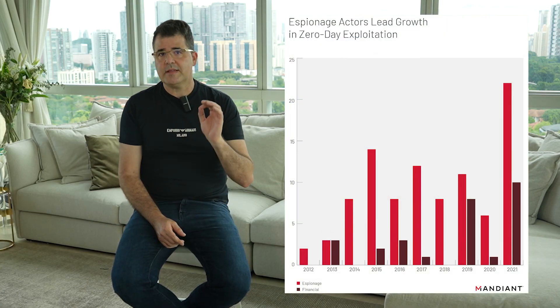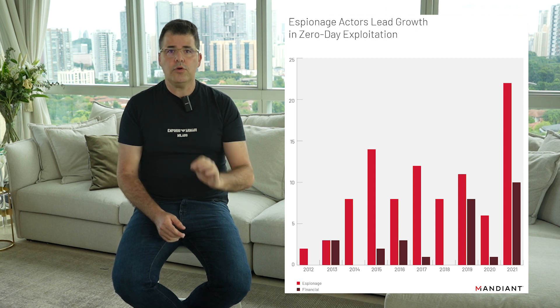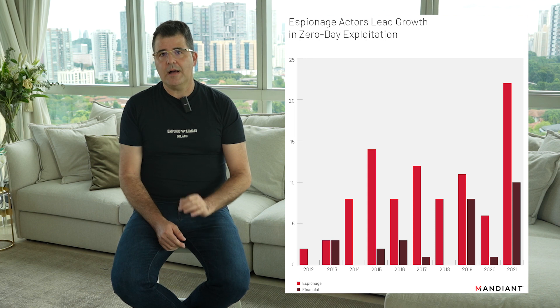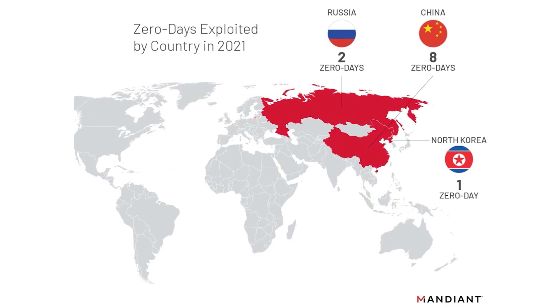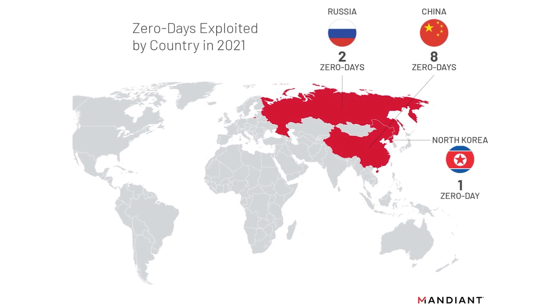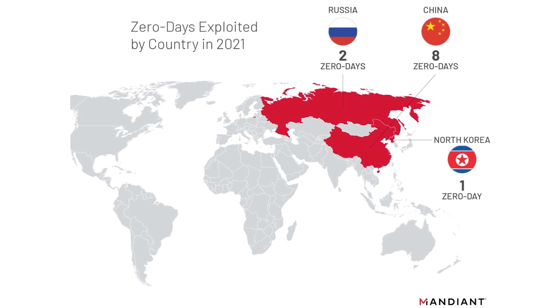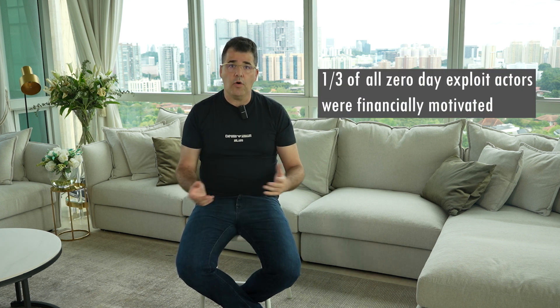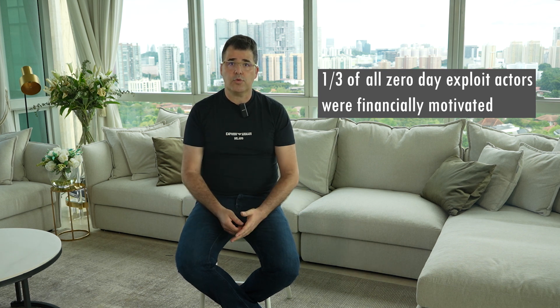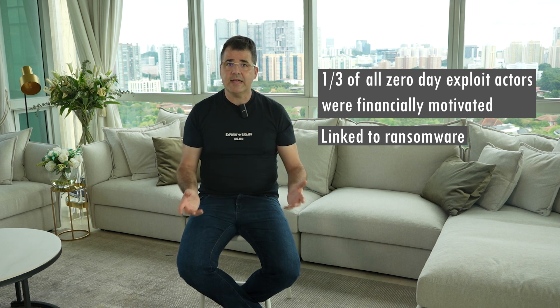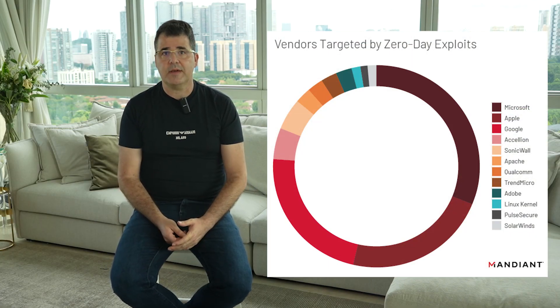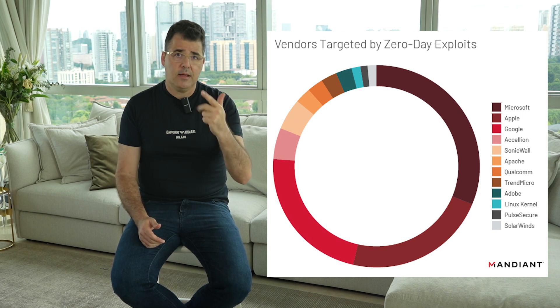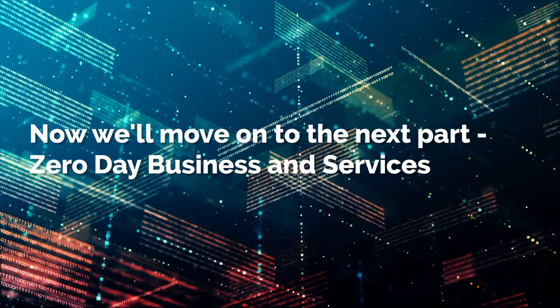Mandiant's findings revealed how state-sponsored espionage groups occupy the top seats when it comes to zero-day attacks. China's espionage activity showed its involvement in eight zero-day attacks in 2021, followed by Russia in two, and North Korea in one. Additionally, financially motivated cybercrime groups contributed one-third of all zero-day exploits across 2021. The reports also shared how zero-day exploitation is linked to ransomware, and that popular vendors are highly targeted — the top three most affected being Microsoft, Apple, and Google. Now we'll move on to zero-day business and services.